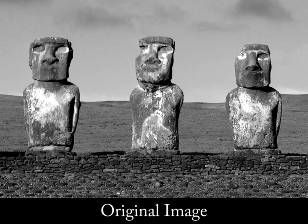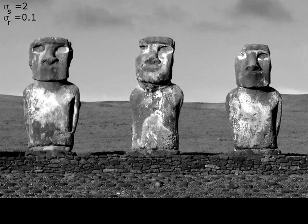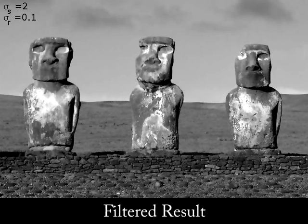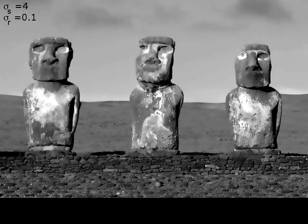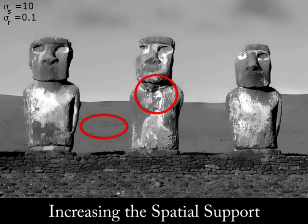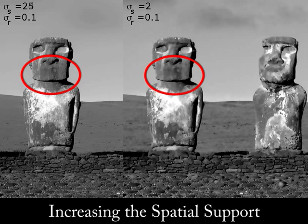The bilateral filter is probably the most popular edge-preserving filter in computer graphics. This filter does a good job at filtering small-scale details, but it is not well-suited for progressive coarsening of images, which requires filtering the larger-scale details as well while preserving the salient edges. Here you can see that if we increase only the spatial support of the filter, sigma s, some small-scale details simply refuse to go away and sometimes even reappear.